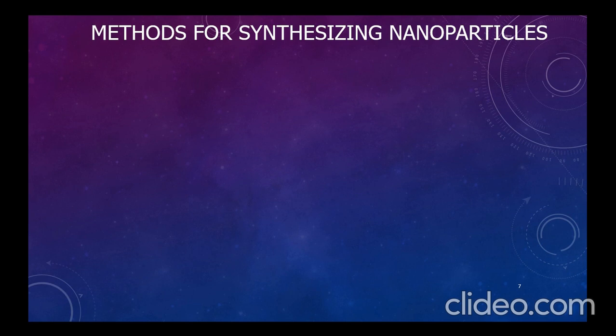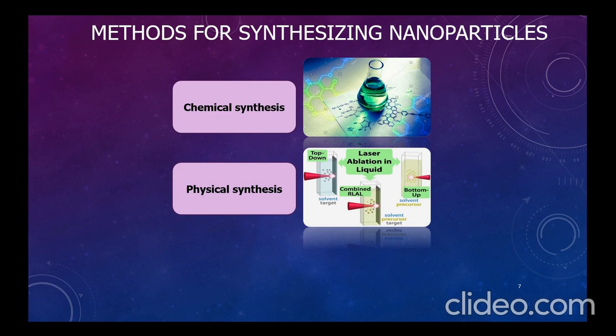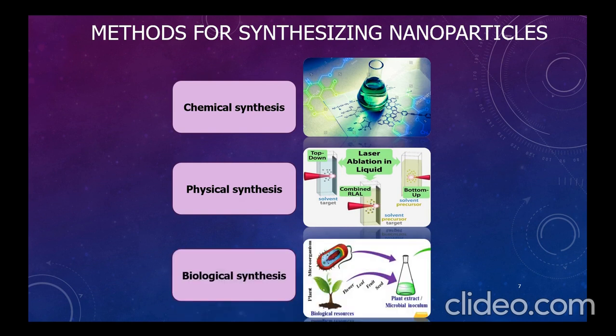There are three types of nanoparticle synthesis methods. First, chemical synthesis involves the controlled formation of nanoscale materials through chemical reactions. Second, physical synthesis does not involve chemical reactions but relies on techniques like evaporation, condensation, and physical deposition. Third, biological synthesis — also known as biofabrication or green synthesis — involves the use of living organisms such as bacteria, fungi, plants, or their extracts to produce nanoparticles with specific properties.